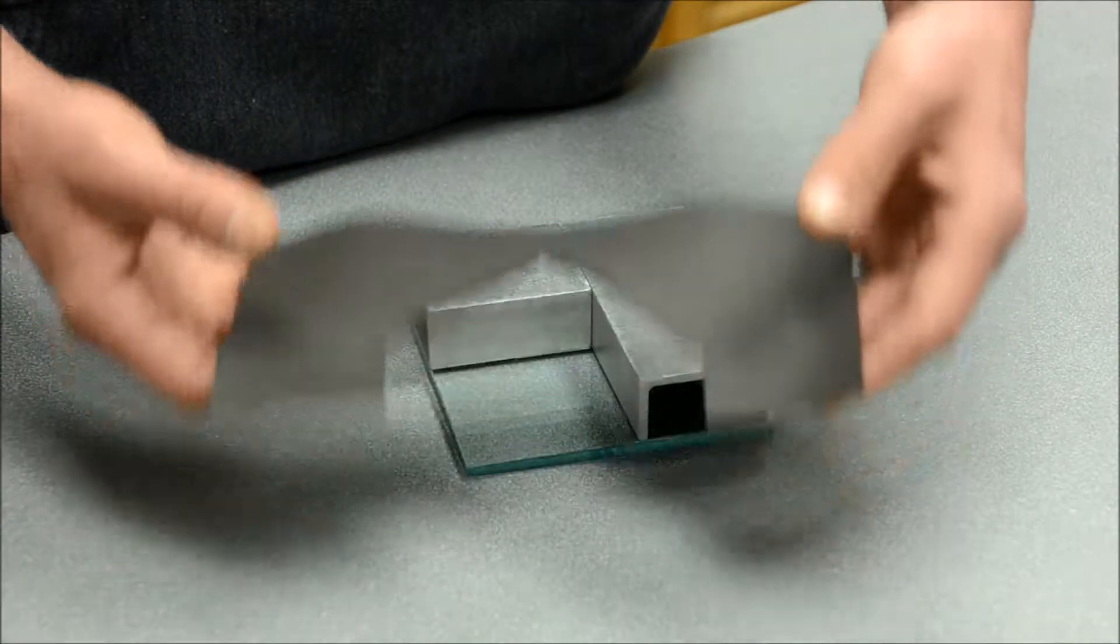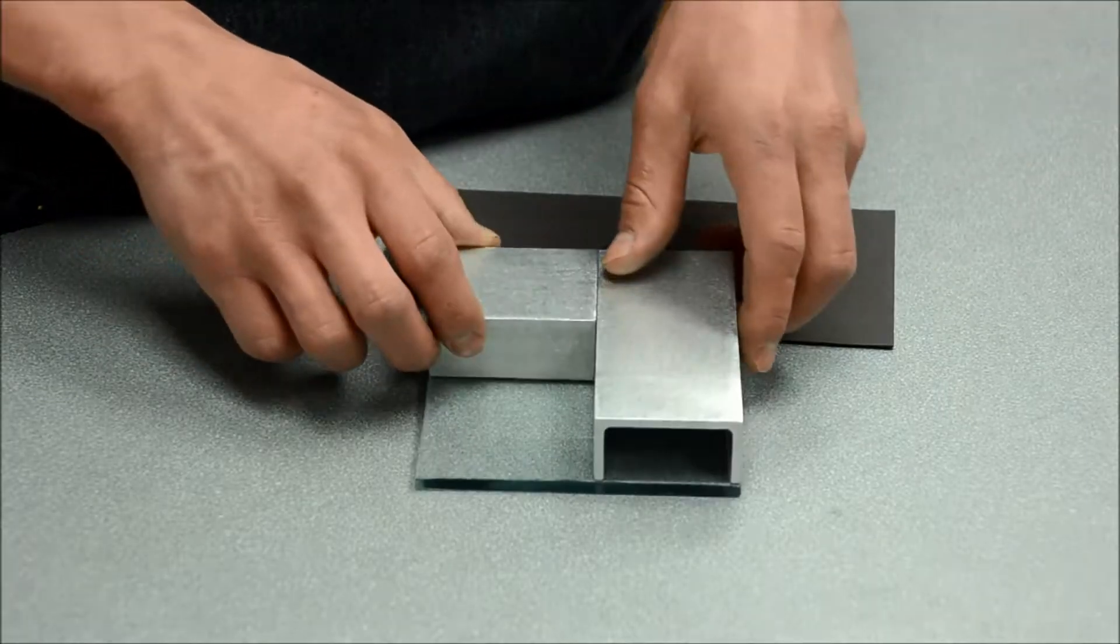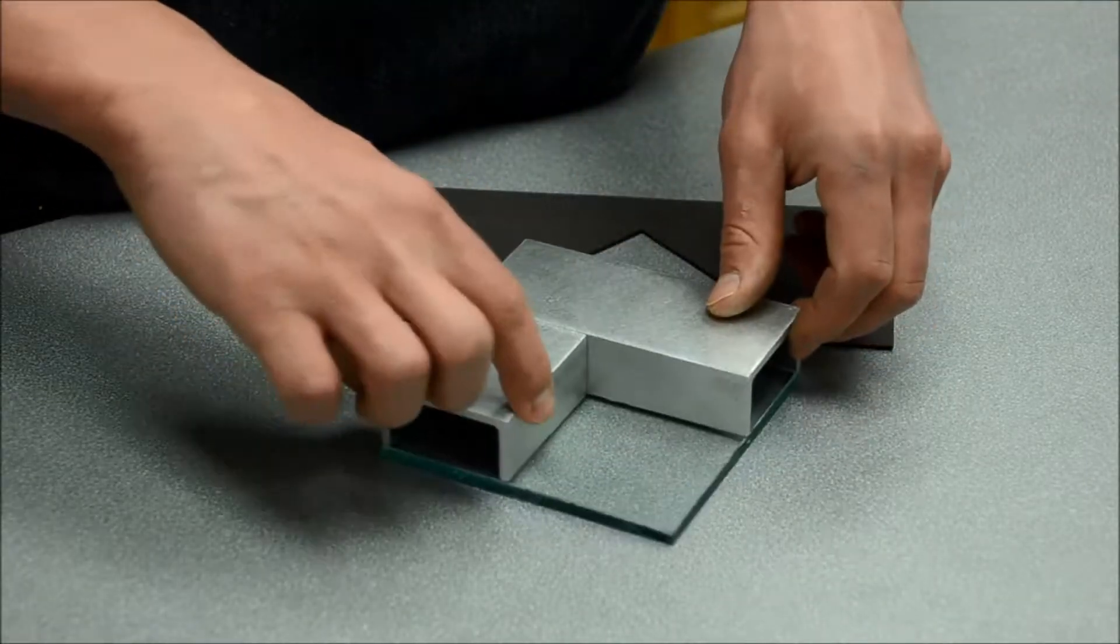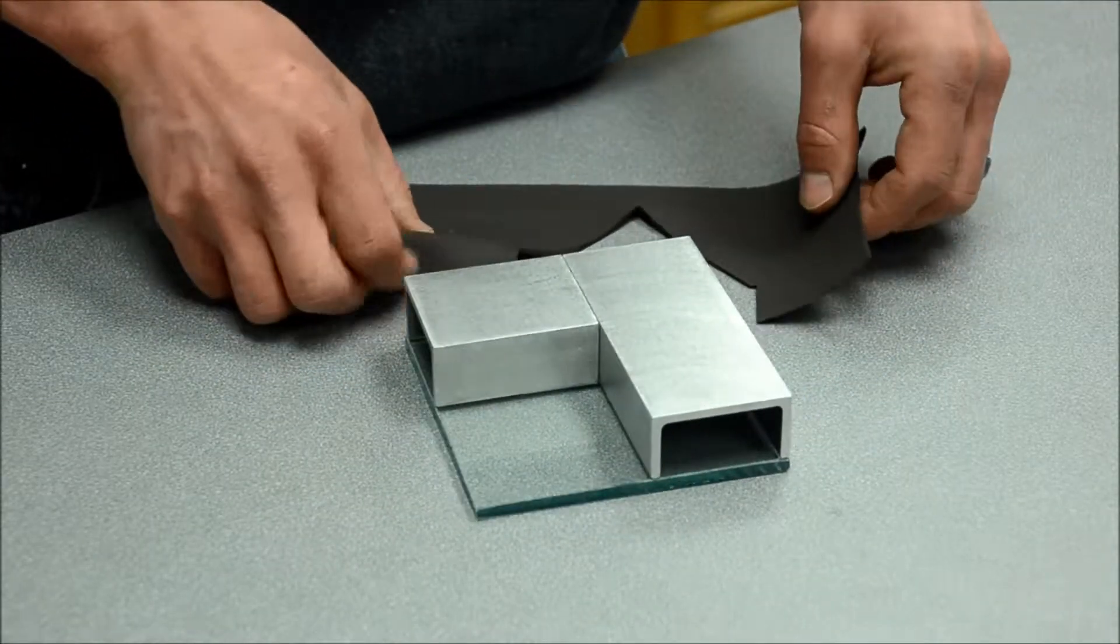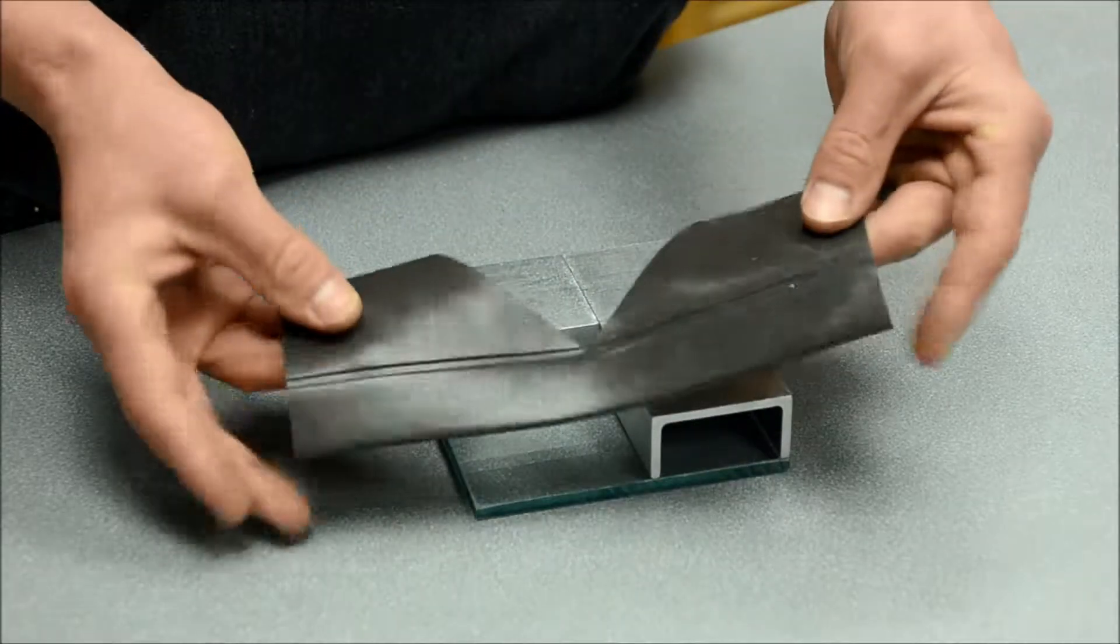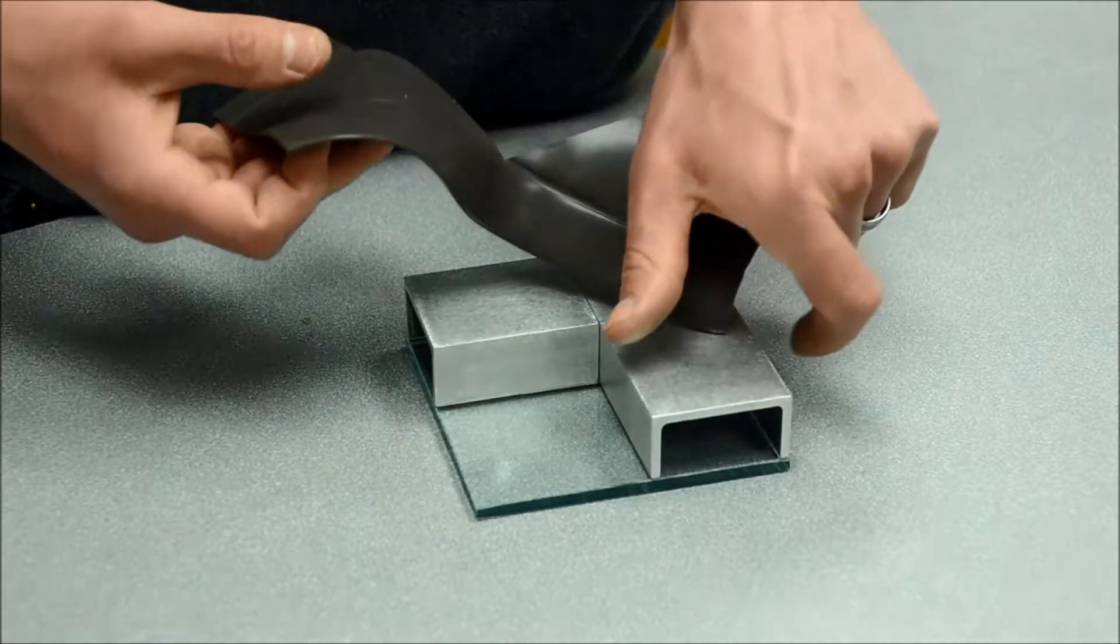This particular detail is the corner detail in which the mullion is the same size on both sides. This extrusion is notched. It has a 2 inch notch to match the mullion.